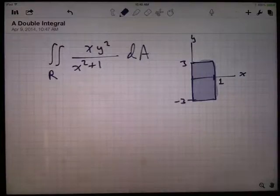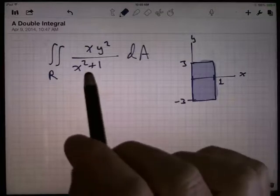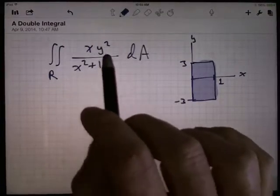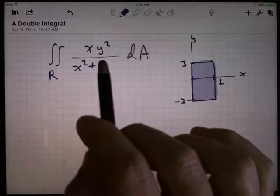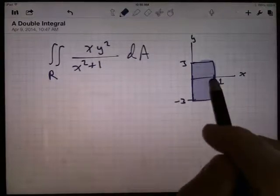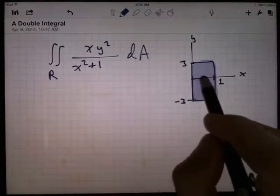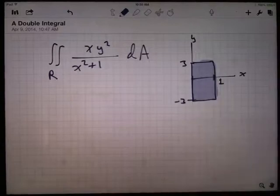All right, here's an example of evaluating a double integral using Fubini's theorem. I'm going to turn this double integral into an iterated integral. I want to find the volume underneath this function over the rectangle R, where R is this thing here. So X is going from 0 to 1, Y is going from minus 3 to 3.